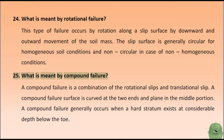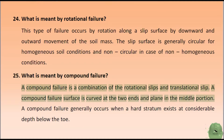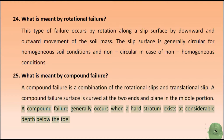What is meant by compound failure? A compound failure is a combination of rotational slips and translational slip. A compound failure surface is curved at the two ends and plane in the middle portion. A compound failure generally occurs when a hard stratum exists at considerable depth below the toe.